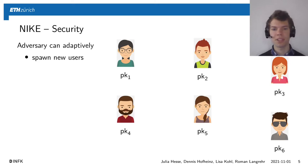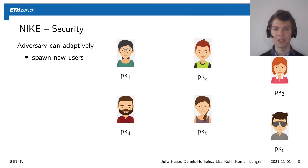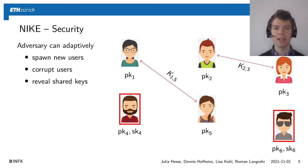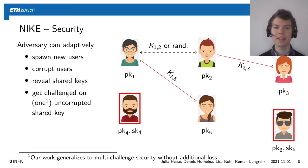Now I will talk about the security notion we will consider in this talk. An adversary has several oracles that he can query adaptively as often as he wants. The first oracle is to create new users, and whenever he does this he gets their public key. Then he can corrupt these users, meaning he gets their secret key. Finally, he can reveal shared keys — that is, he selects two users and gets the shared key between them. There is also an oracle he can query once where he gets the shared key between two users or a random value, and his goal is to distinguish between these two variants.